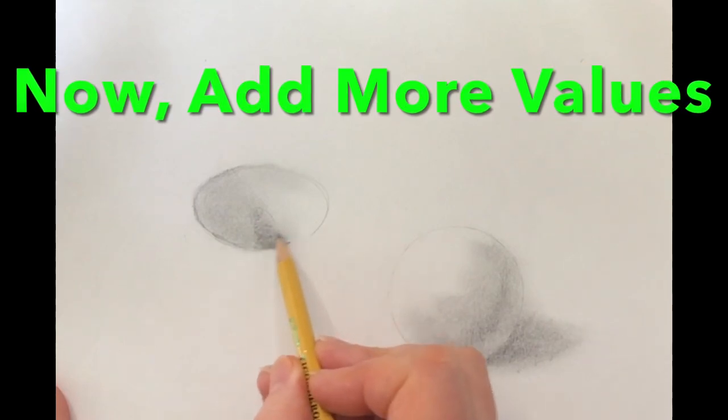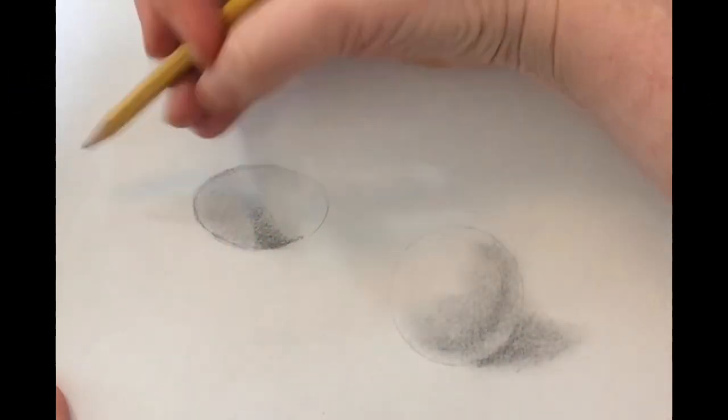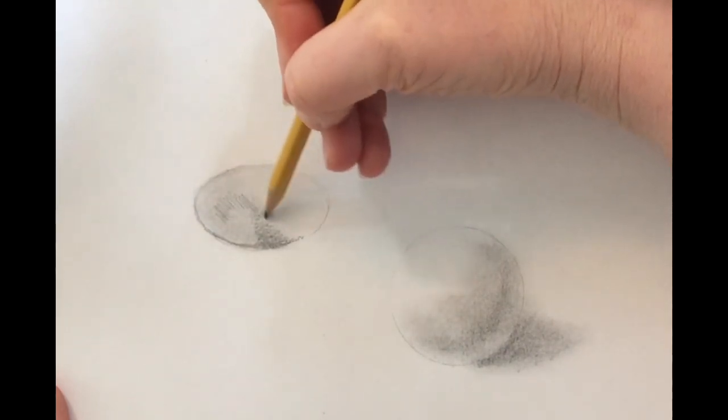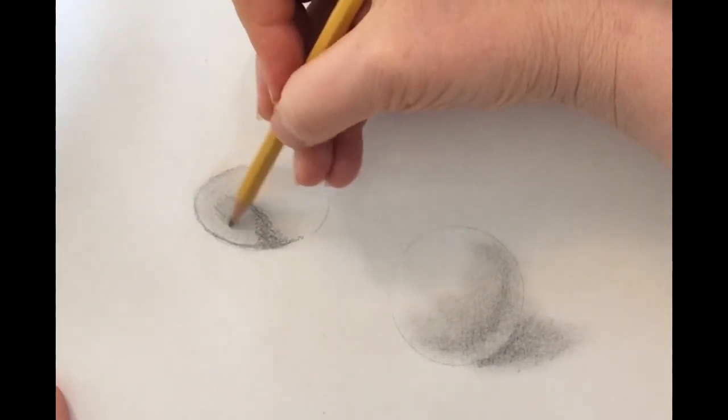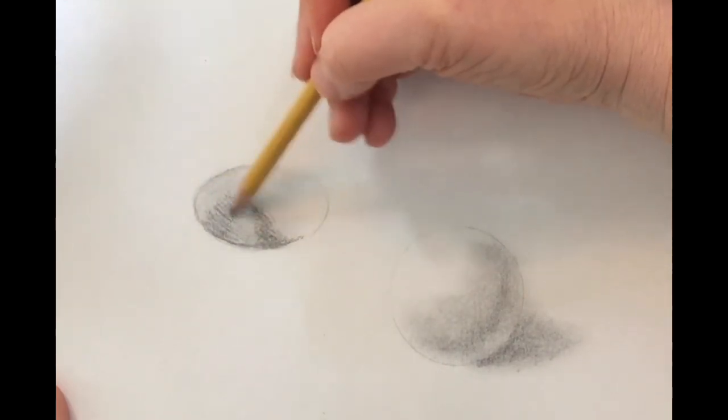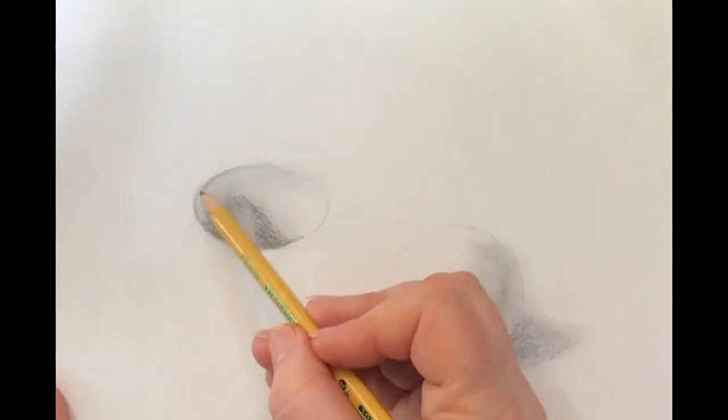Now I'm going to add more values and this is kind of a finesse. This is something that you just need to watch, and you can stop and pause and see how things go. You might choose different values than I did. It might not look exactly the same, but look for a rhythm.